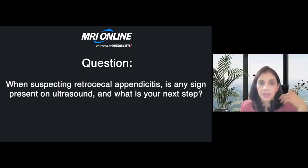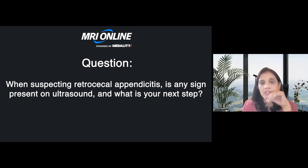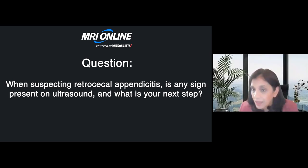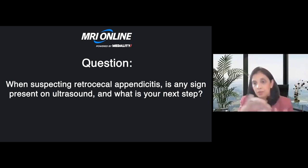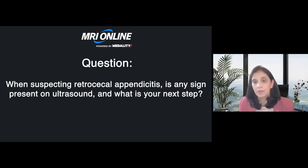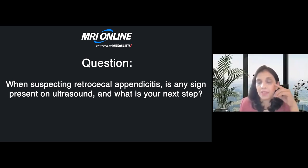When you suspect a retrocecal appendix, is there any sign on ultrasound and what's the next step? The next step is CT when you really suspect it. You can try patient positioning maneuvers — turning left and right to avoid bowel gas — and scan behind. But if you can't visualize it, you have to go for a CT when there is a high index of clinical suspicion.